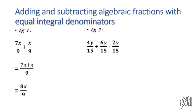Moving on to the second example: here there are three fractions with addition and subtraction. 15 is the common denominator for all three fractions, so we write 15 as the common denominator. 4y plus 6y is 10y, minus 2y gives 8y over 15.